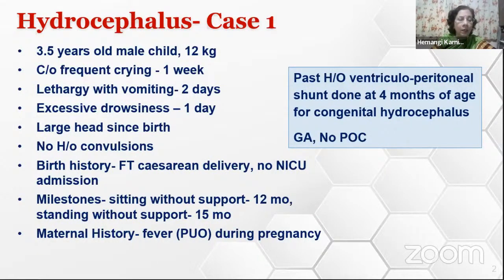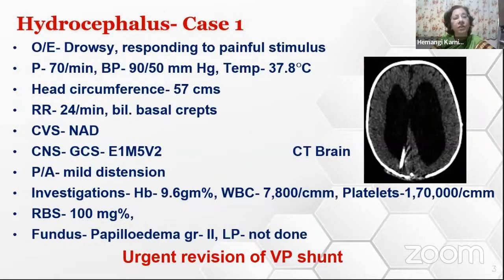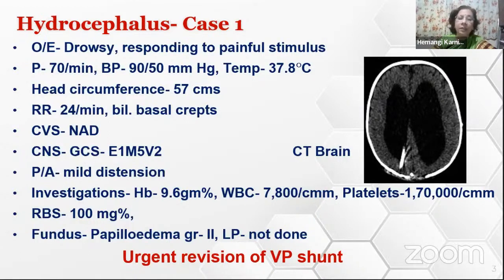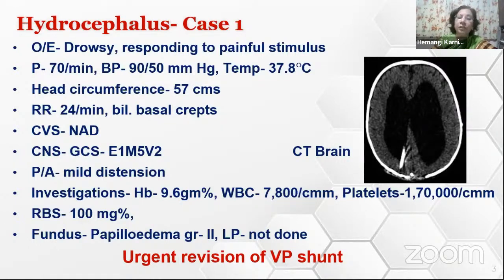In the maternal history, mother gives a history of fever of unknown origin during pregnancy but no details are known. On examination the patient was drowsy, responding to painful stimuli. Vital parameters were stable. Head circumference was 57 centimeters. Respiratory system revealed occasional bilateral crepitations. On consciousness assessment: not opening eyes, responding verbally only by grunting—E1 M5 V2. Abdomen was mildly distended but not tense. Fundus showed papilledema grade 2. CT brain showed dilated ventricles with VP shunt in situ. Neurosurgeons decided to do urgent revision VP shunt.